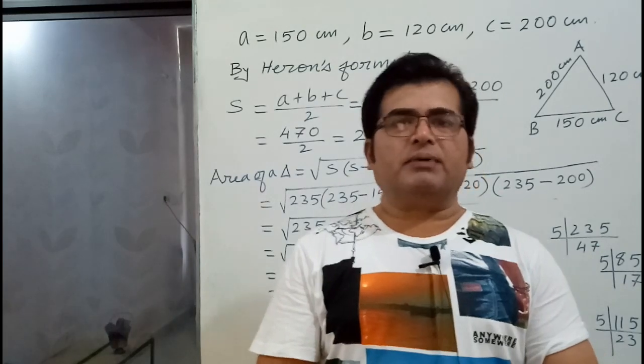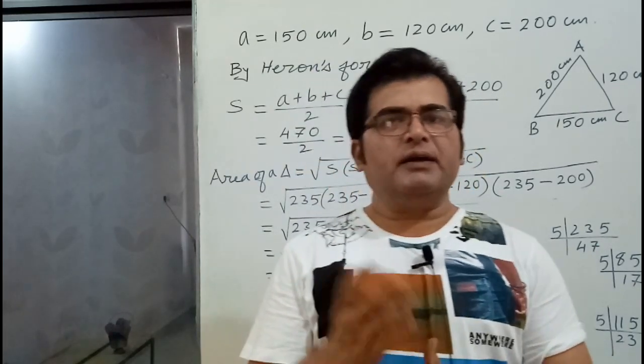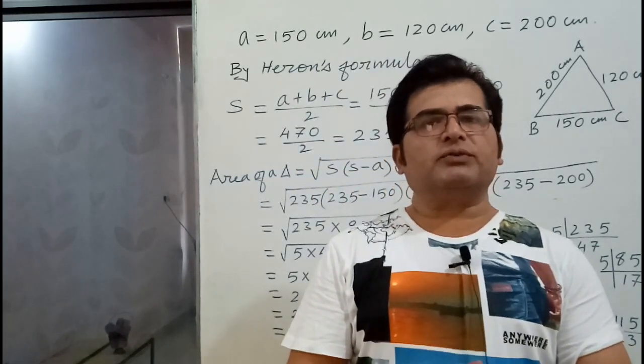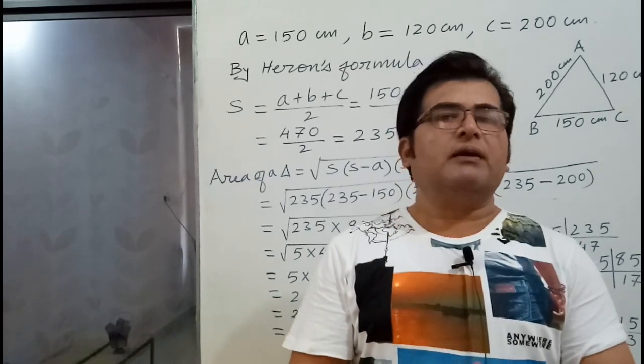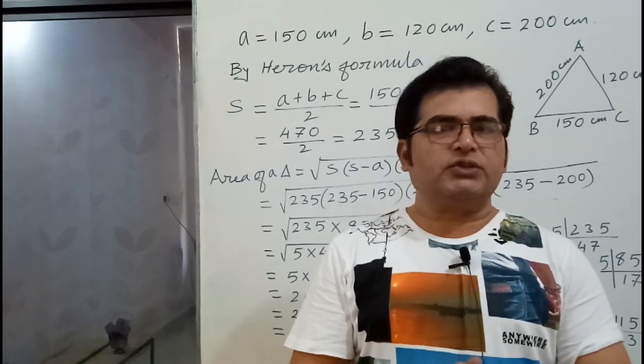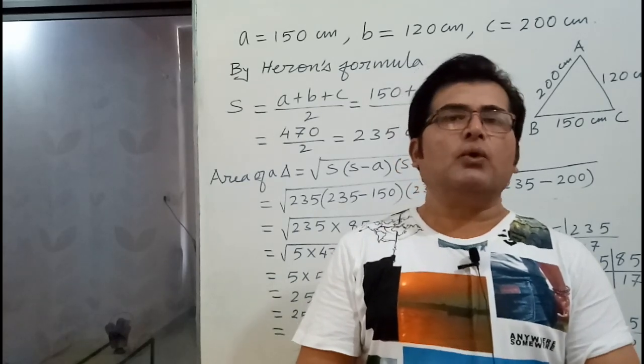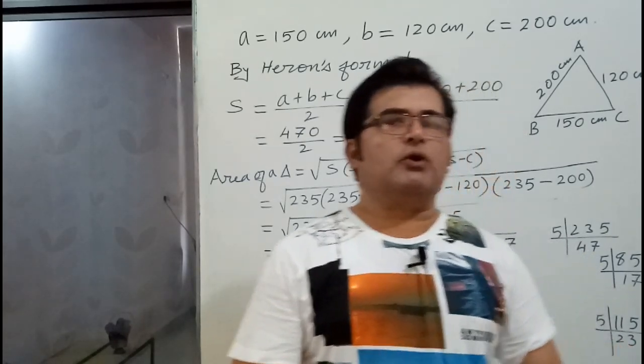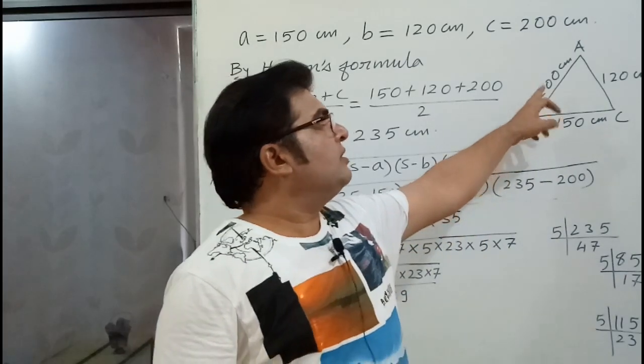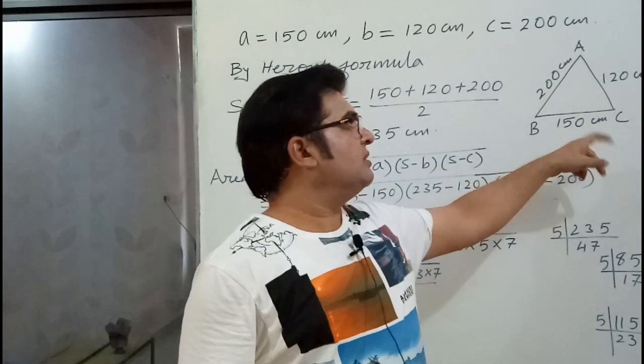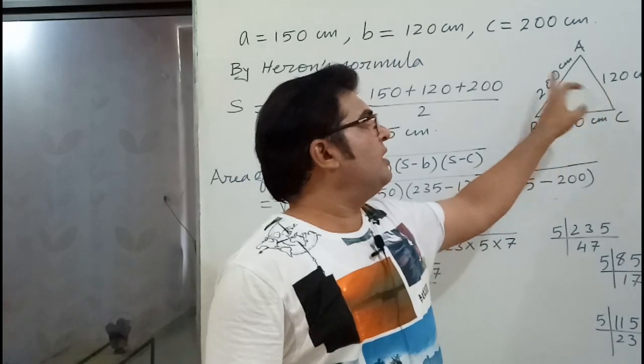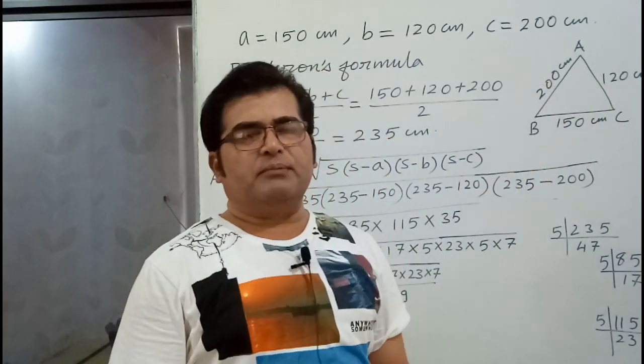We have to find area of a triangle. I have already told in this chapter that Heron's formula we apply when the height of a triangle is not given. In this sum, height of a triangle is not given, so we have to apply Heron's formula. Here I have drawn a triangle ABC whose sides are representing 150, 120 and 200 cm.